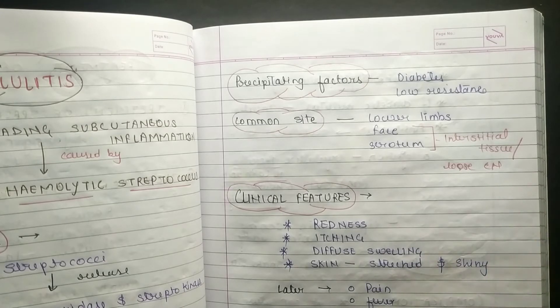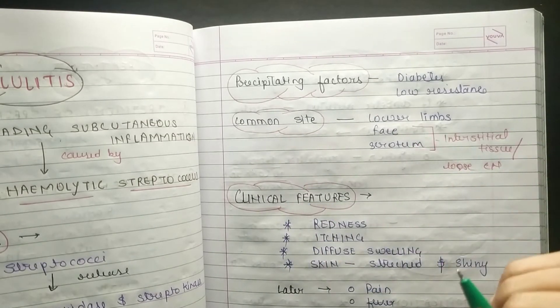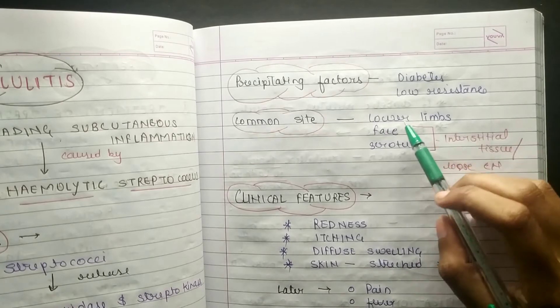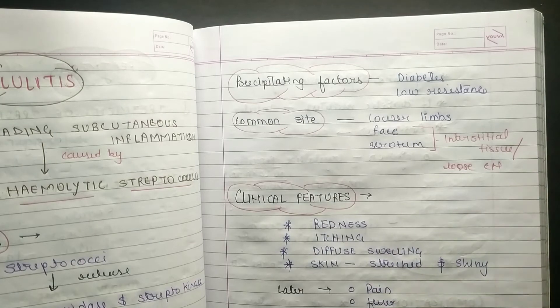Common sites - the main common sites are loose connective tissues of lower limb, face, and scrotum. Interstitial tissue or loose connective tissue.